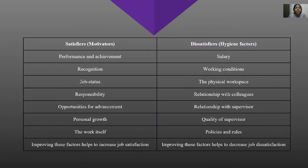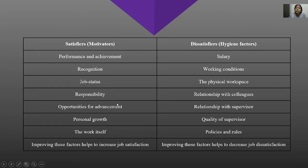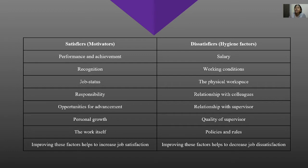Satisfiers are the motivators necessary for us to do a good job: performance and achievement, recognition, status, responsibility, advancement, opportunities, growth, and the work itself. All these factors are necessary to satisfy us. Improving these factors helps to increase job satisfaction — if we feel these factors, we feel satisfied. Dissatisfiers are the hygiene factors: if they are absent, we will be dissatisfied. Their absence causes dissatisfaction.